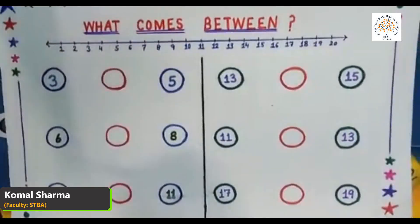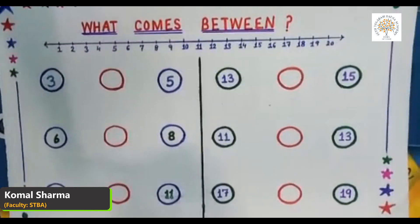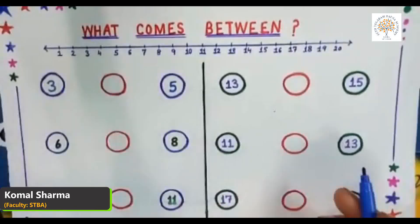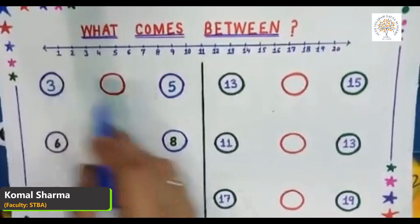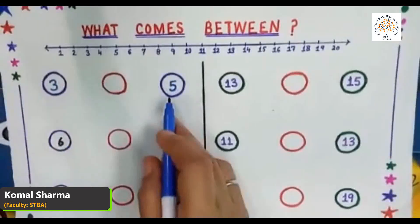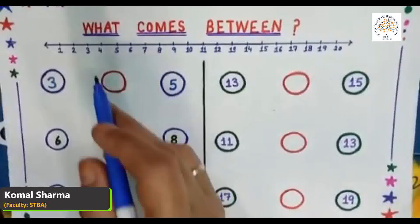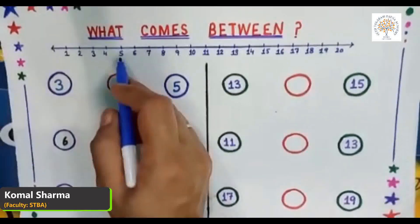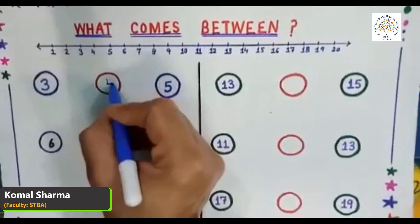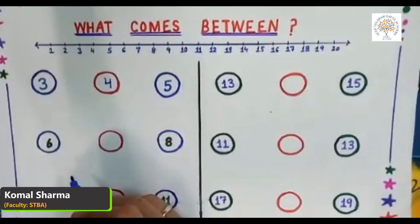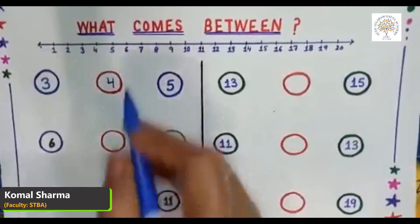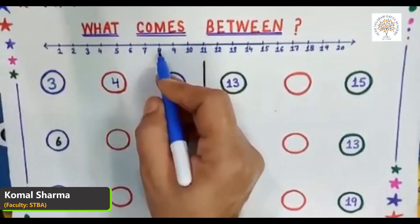In simple language, a 'between' number means the number in the middle of two numbers. Here are some examples. I have written number three and five — we have to find out what comes between them. On the number line, here is number three and number five, and the middle number is four. Now, what is the middle number of six and eight? Look at the number line — here is six and eight.